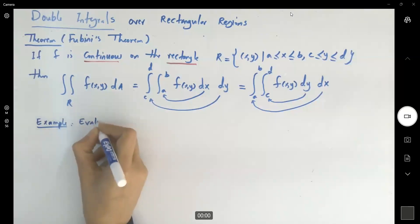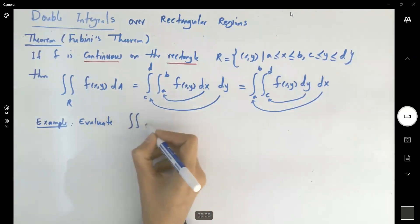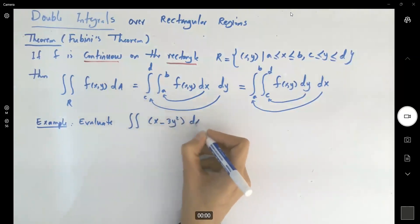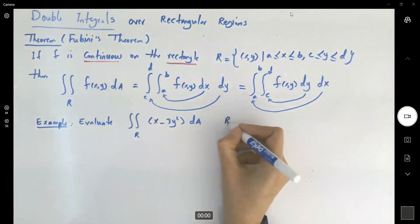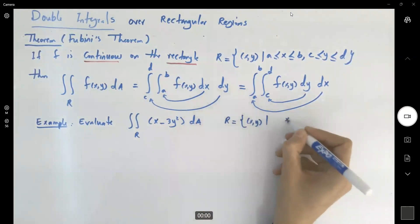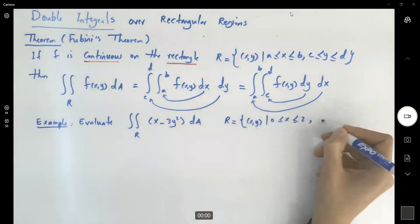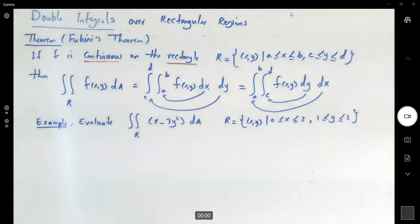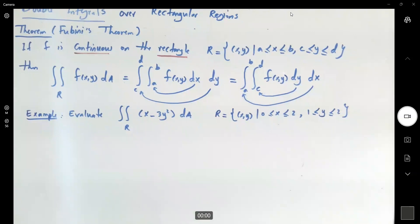Example: Evaluate the following double integral. The double integral of z = x - 3y² dA over region R. Region R is given to you as all x and y's, Cartesian product between 0, 2, and y is bounded between 1 and 2. Perfect.